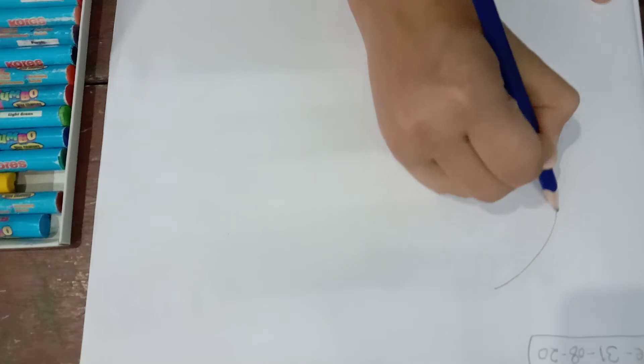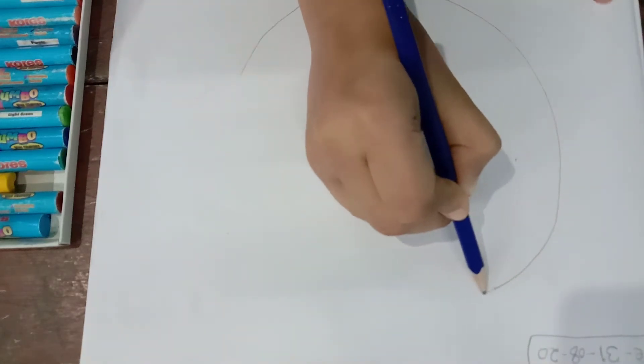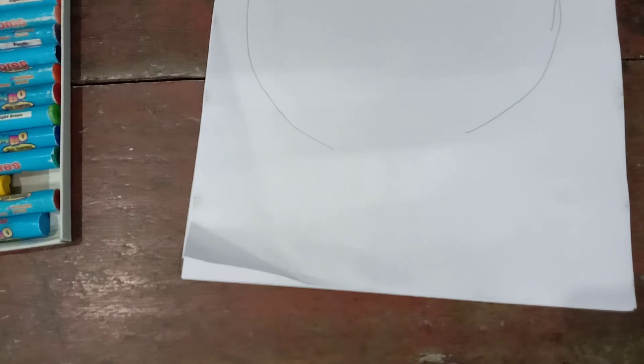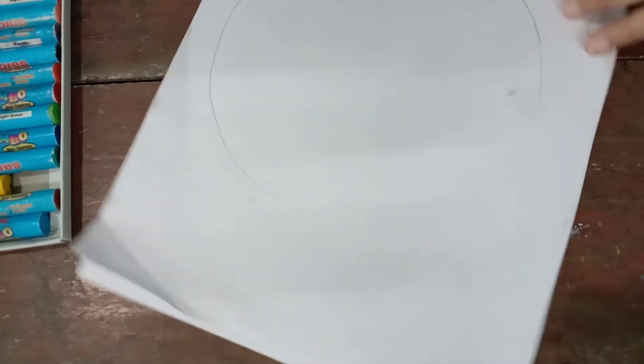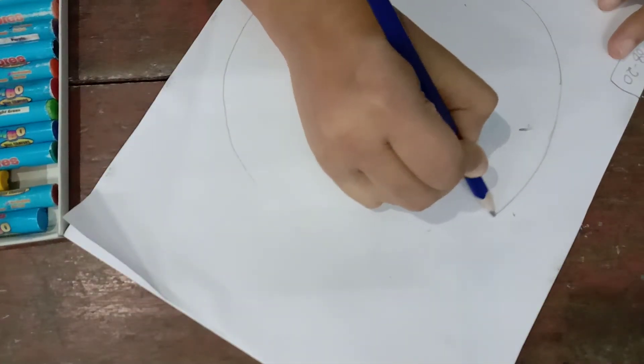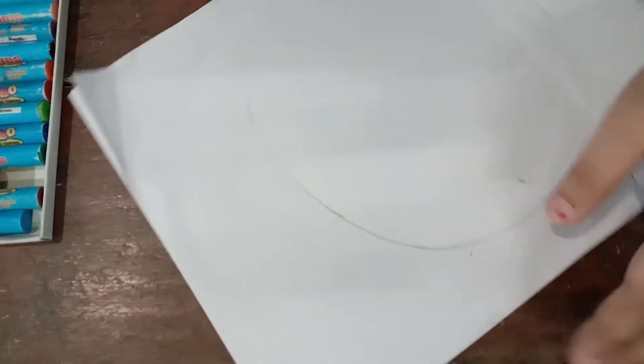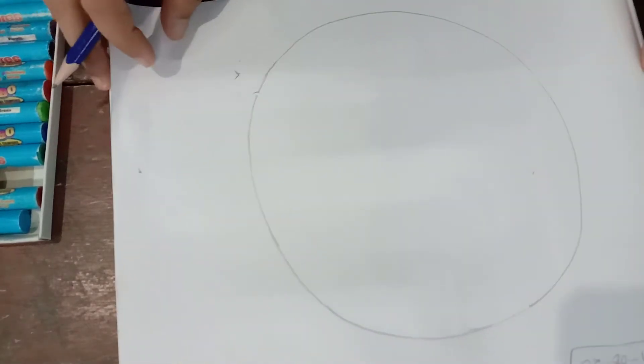Ok students, you see here, first you make a circle. Like this. Your circle is ready now.